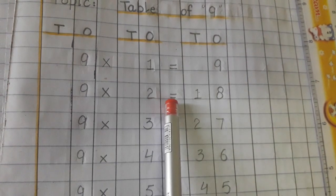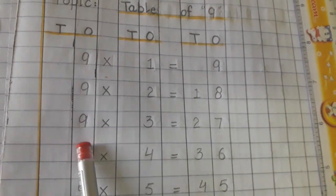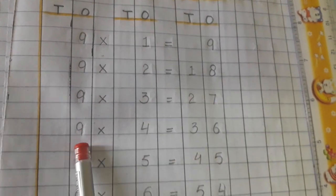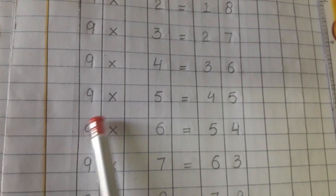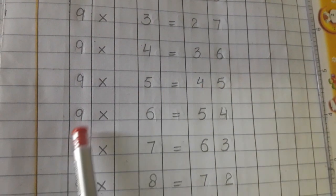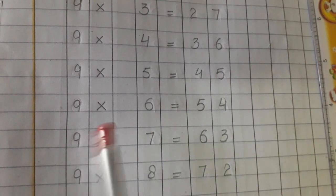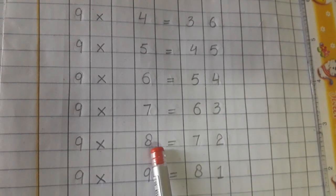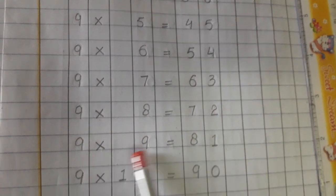Nine twos are eighteen, nine threes are twenty-seven, nine fours are thirty-six, nine fives are forty-five, nine sixes are fifty-four, nine sevens are sixty-three, nine eights are seventy-two, nine nines are eighty-one, nine tens are ninety.